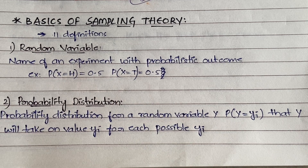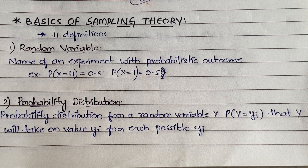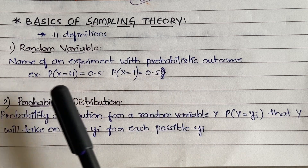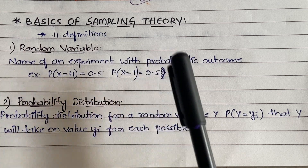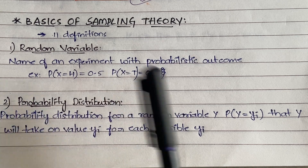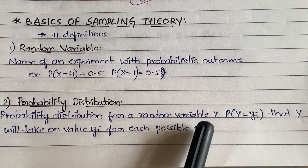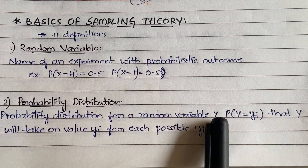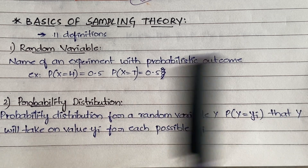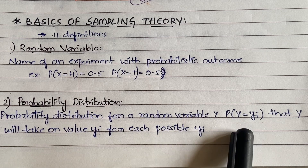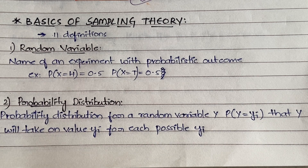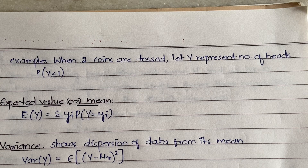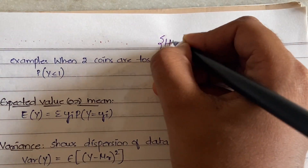When you toss a coin you may get either head or tail. The probability of getting head is 0.5 and the probability of getting tail is 0.5, but we are not sure whether we are going to get head or tail. The second definition is probability distribution. For a random variable y, P(y) = yi means y will take on value yi for each possible outcome.